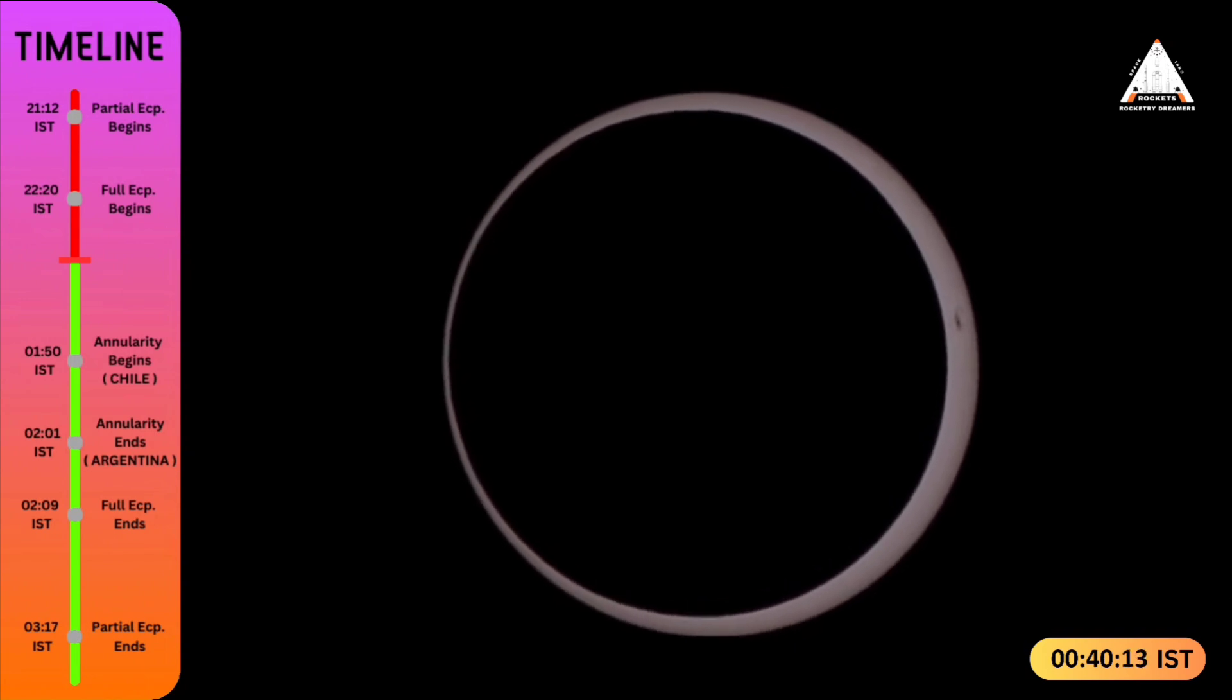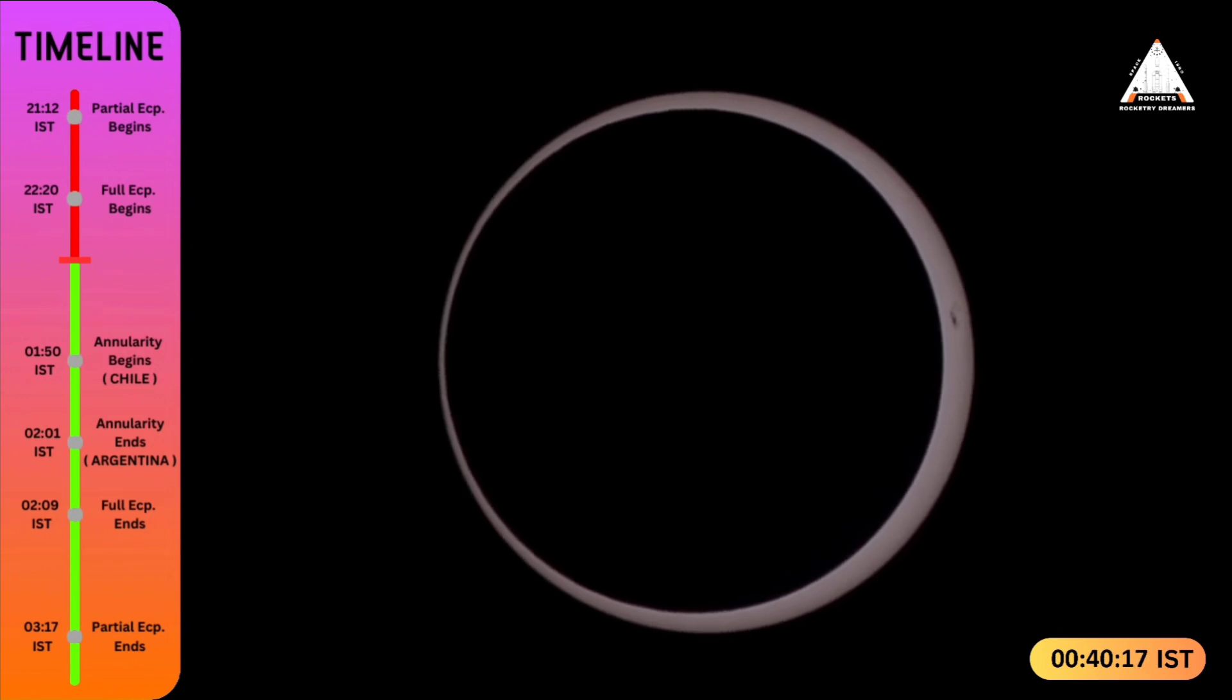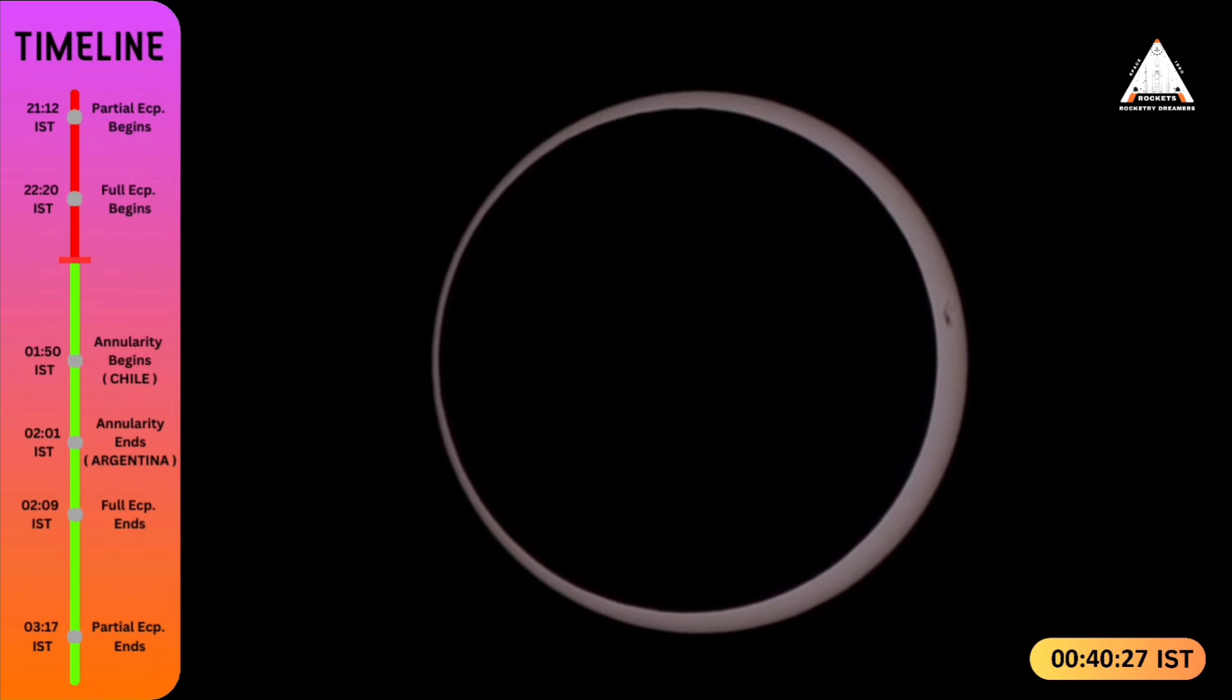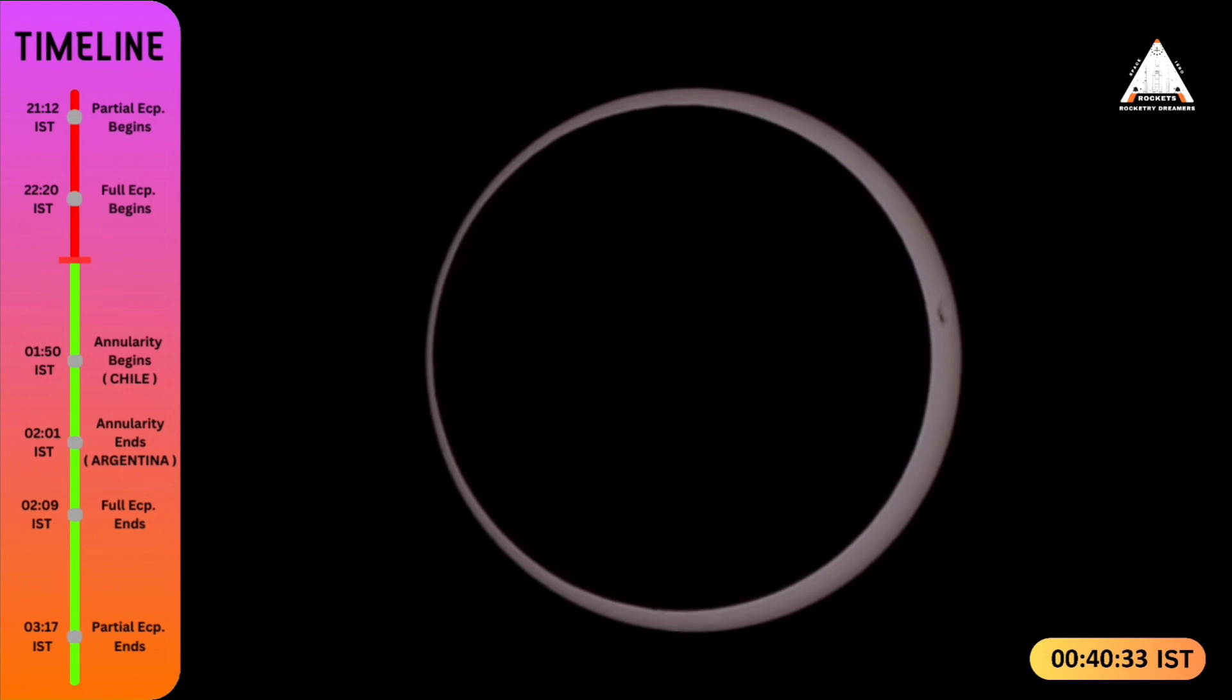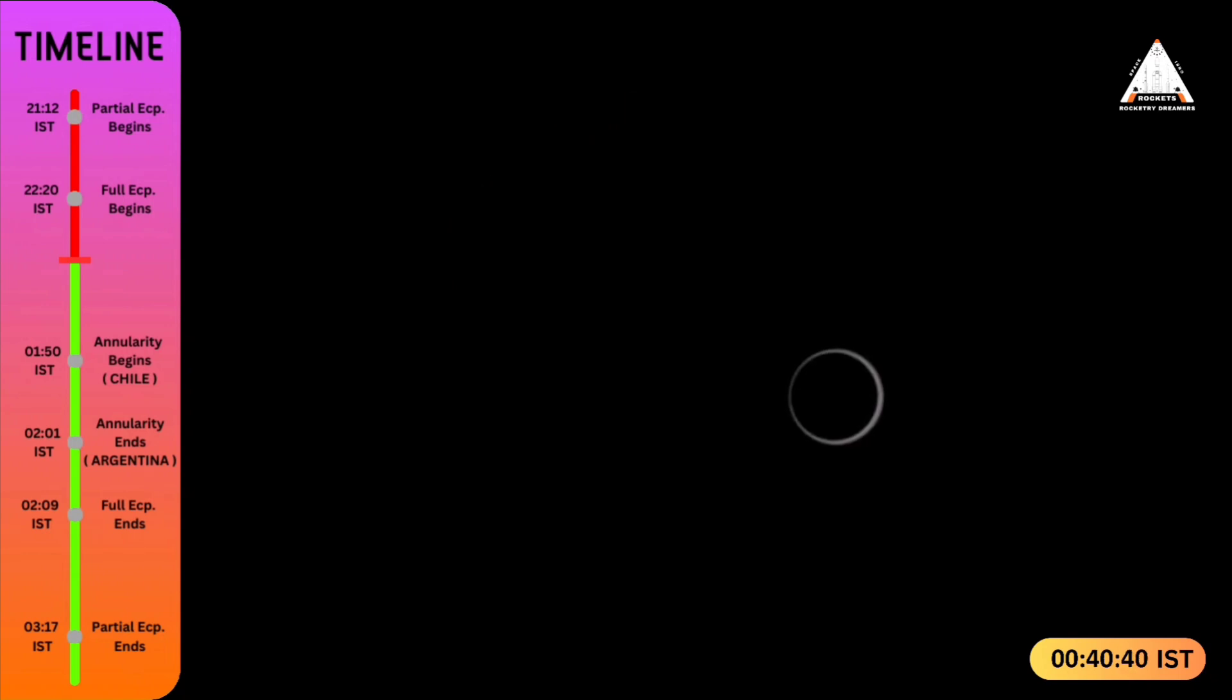This eclipse plays a very vital role because this is the last eclipse. After this annular solar eclipse, there won't be another one until 2026. This is a kind of tension for astronomers - next year there is no total solar eclipse as well as no annular eclipse.